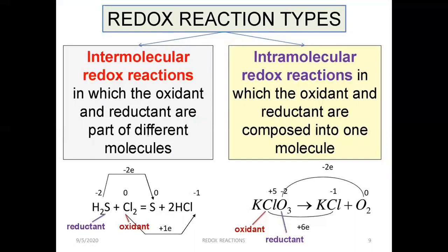There are three types of redox reactions, but in this slide we will see two. The first is intermolecular redox reactions and the second is intramolecular redox reactions. Intermolecular redox reactions are those in which the oxidant and reductant — that is, the oxidizing agent and reducing agent — are part of different molecules. For example, in H2S plus Cl2, which gives S plus 2HCl, H2S is losing hydrogen so it is getting oxidized and acting as the reductant, while Cl2 is gaining hydrogen so it is getting reduced and acts as oxidant. So here, the oxidizing agent and reducing agent belong to different molecules — this is an intermolecular redox reaction.